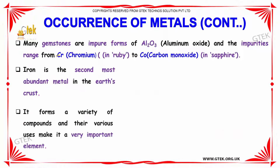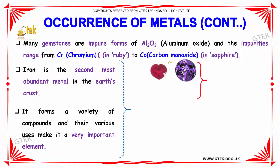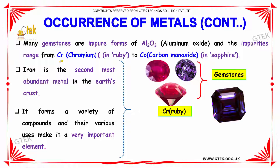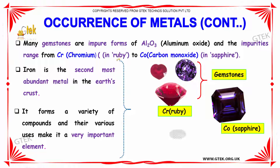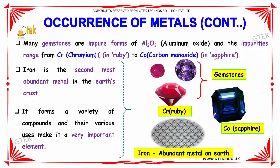Many gemstones are impure forms of aluminum oxide. The impurities range from chromium — as in ruby — to carbon monoxide in sapphire.